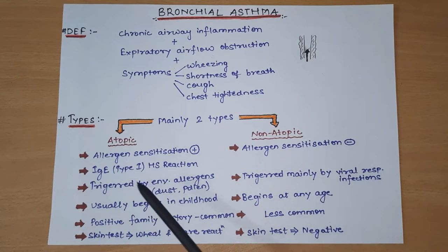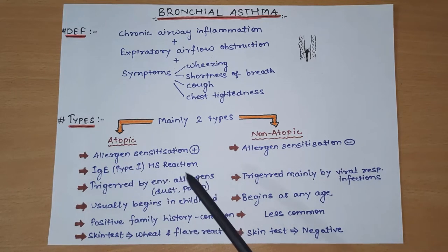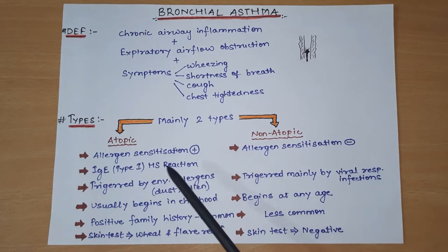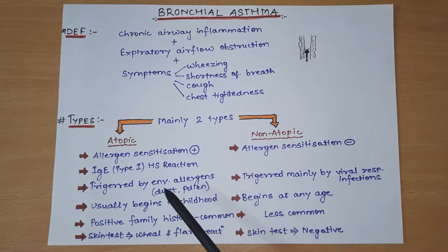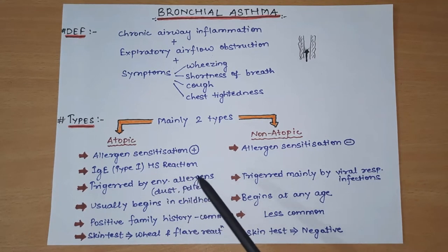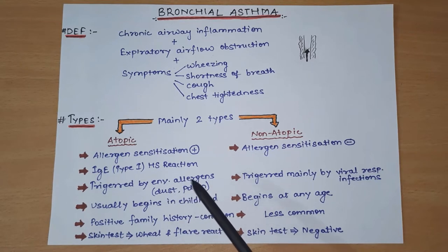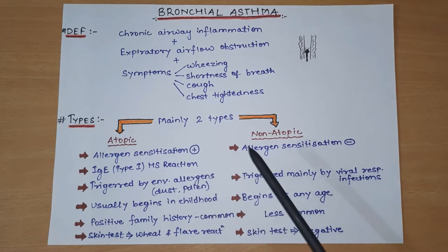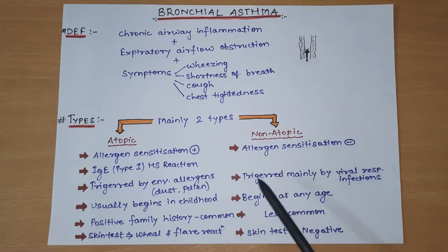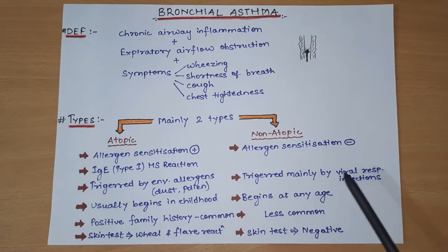Atopic asthma is mainly triggered by environmental allergens - because allergen sensitization is the cause, environmental allergens such as dust and pollen play a major role in triggering atopic asthma. Non-atopic asthma is mainly triggered by viral respiratory infections.